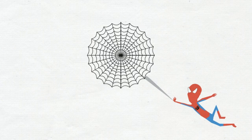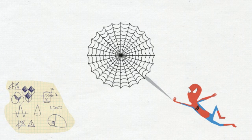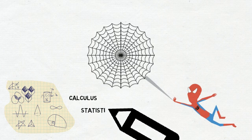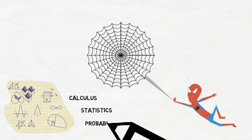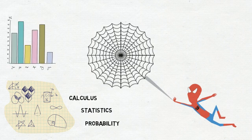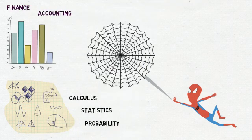So what skills do actuaries possess that make them such a valuable resource? Actuaries have specialized mathematical knowledge. Some of their strong areas are calculus, statistics and probability. They have good domain knowledge in the area of finance, accounting and economics.